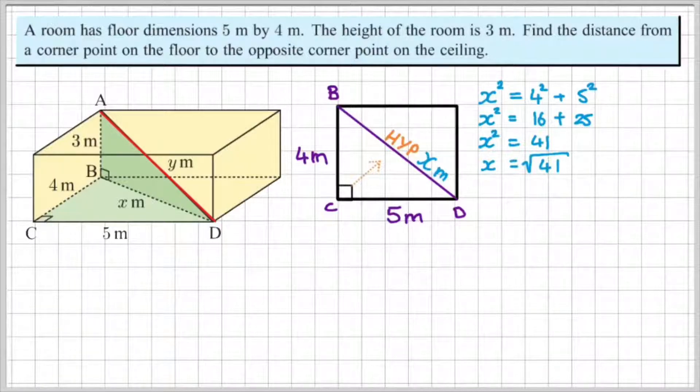Remember, we only take the positive square root since we know that the length is going to be greater than 0, i.e. it's going to be positive.